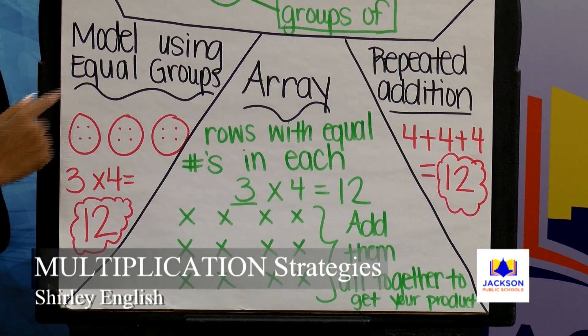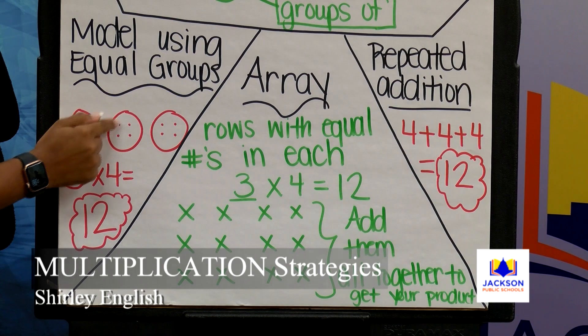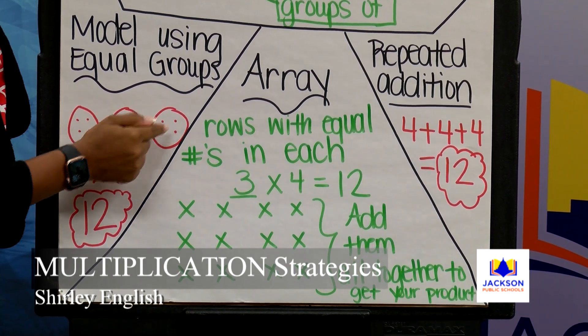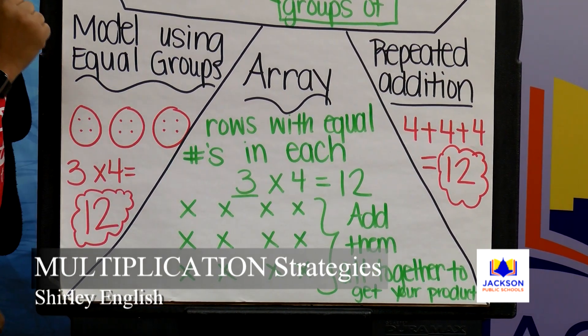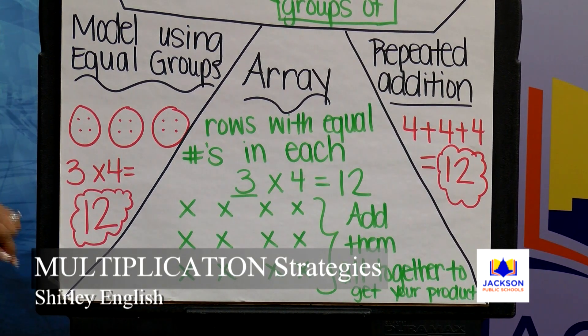Now, when I add all of these up — one, two, three, four, five, six, seven, eight, nine, ten, eleven, twelve — I get my product, which is twelve.